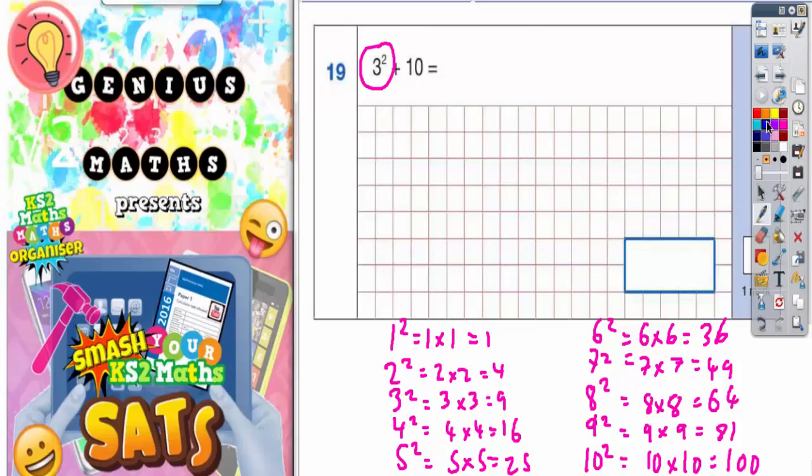Now our question is asking us for 3 squared. So 3 squared is 3 times 3, which is this one here, which is 9. So 3 squared is 9. Then we've got to add on 10. So we've basically just got to do 9 add 10. And 9 add 10 is very, very easy. 9 add 10 is 19.